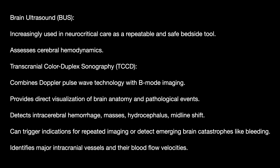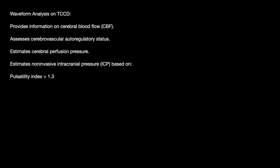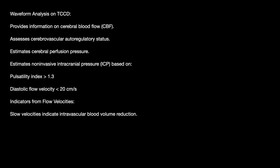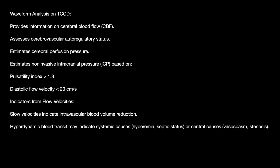It identifies major intracranial vessels and their blood flow velocities. Waveform analysis provides information on cerebral blood flow, assesses cerebrovascular autoregulation status, and estimates cerebral perfusion pressure. Non-invasive intracranial pressure estimates are based on a pulsatility index greater than 1.3, diastolic flow velocity less than 20, and indicators for flow velocities. Slow velocities indicate intravascular blood volume reduction, while hyperdynamic velocities indicate systemic disease like hyperemia and sepsis, or central causes like vasospasm and stenosis.